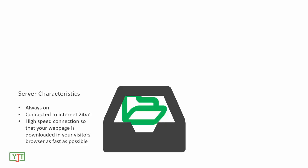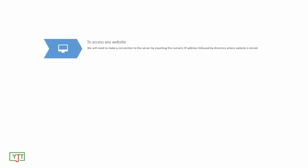You can connect to a server by using its numeric IP address, which is of the form number dot number dot number dot number. To access any website, we will need to make a connection to the server by inputting the numeric IP address followed by the directory where the website is stored. However, it's impossible to remember multiple IP addresses, which is why domain names were invented.